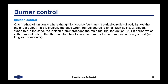One method of ignition is where the ignition source, such as a spark electrode, directly ignites the main fuel output. This would typically be the case when the fuel source is an oil such as number two. When this is the case, the ignition output precedes the main fuel trial for ignition period, which is the amount of time that the main fuel has to prove a flame before a flame failure is registered. This could be as long as 15 seconds.